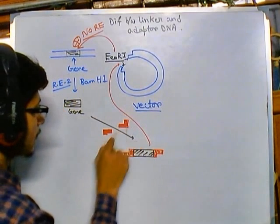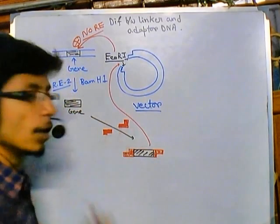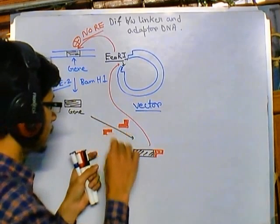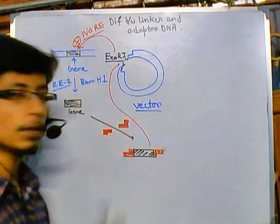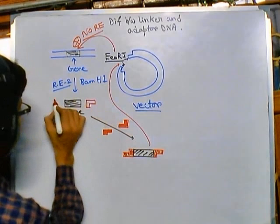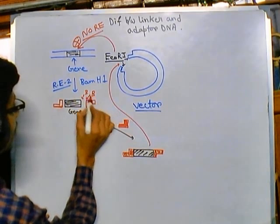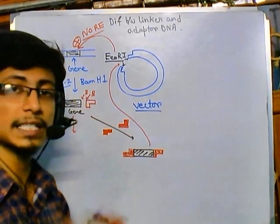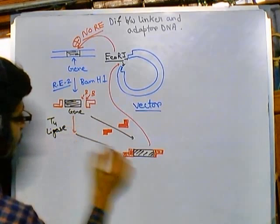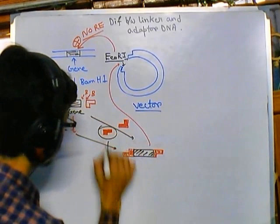If we get these kinds of short sequences and they form a specific structure, they are called adapters — because these are short segments already prepared so that if we attach them to our gene, it will ligate. Both the gene and adapter ends are blunt, so we add T4 ligase which can seal blunt ends, converting them into the desired structure. These segments are called adapters.